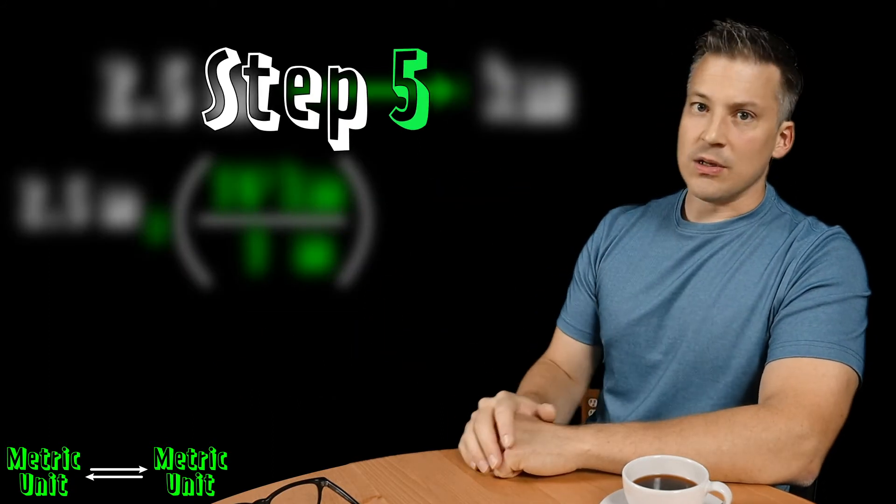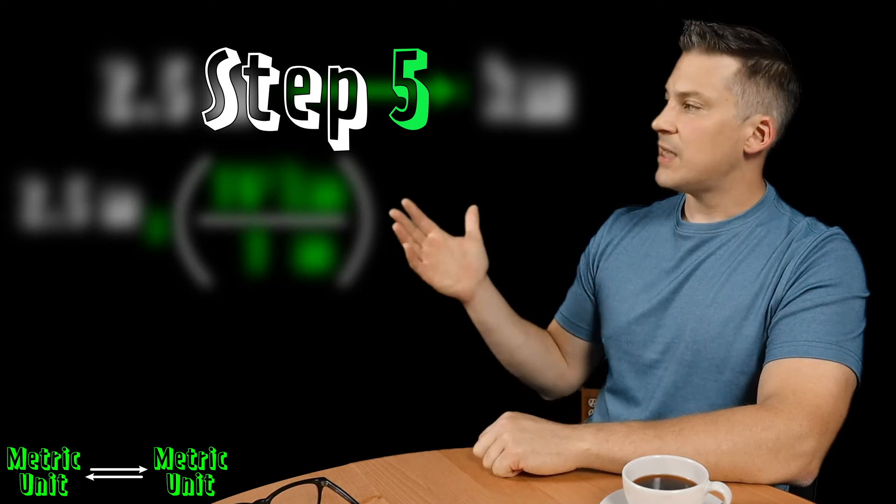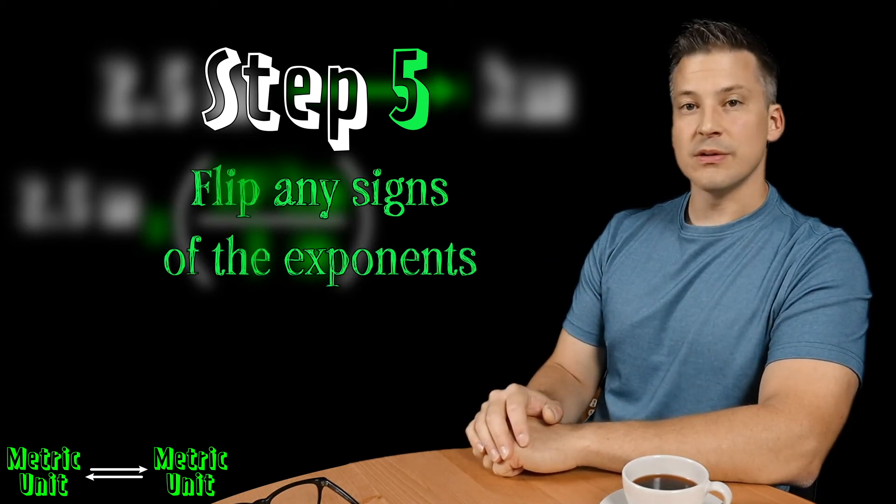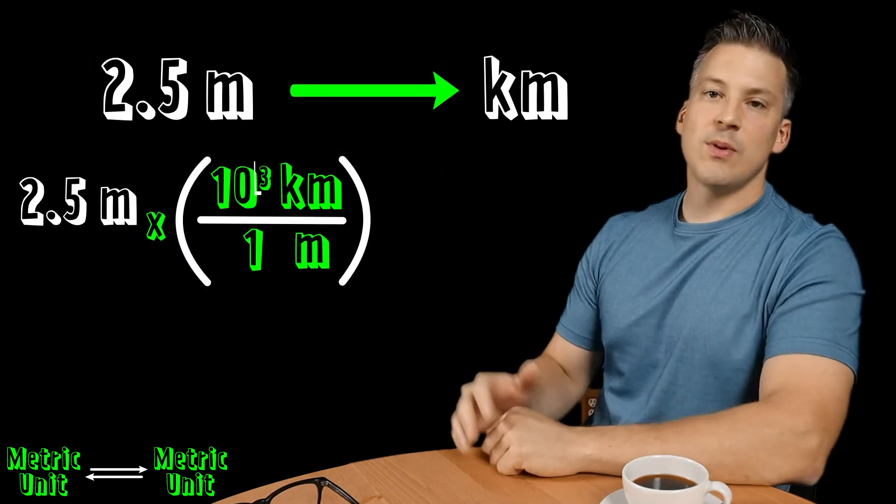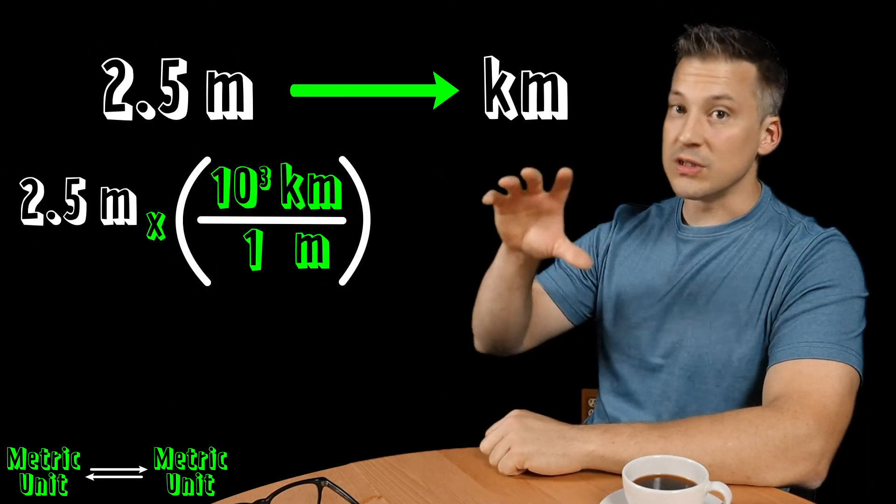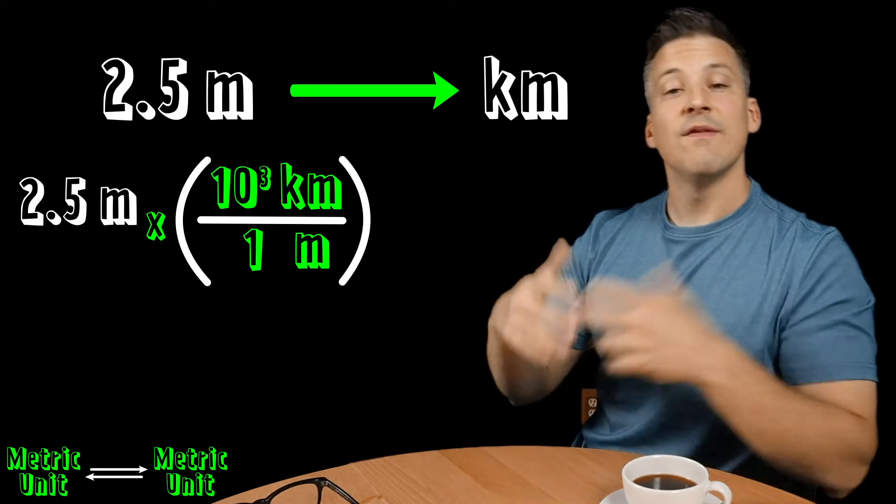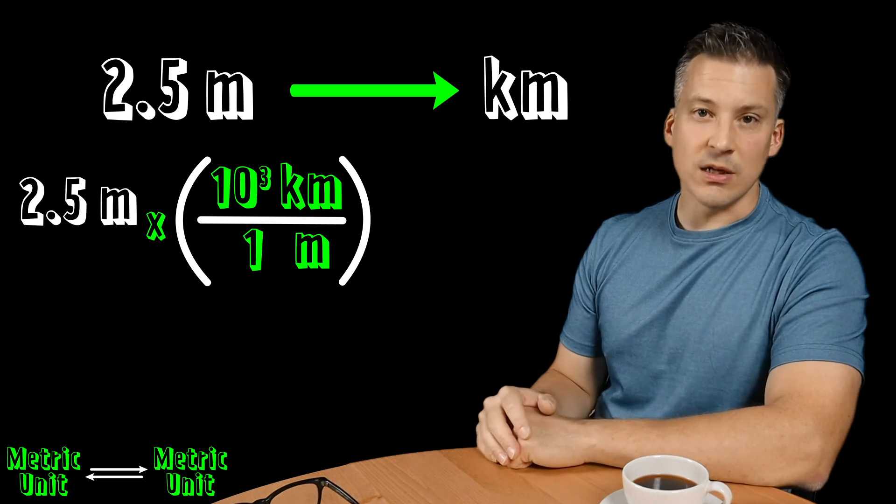The fifth step here is really the most important. The fifth step says to flip any signs of the exponents. So now if you have an exponent here in the conversion fraction, you're going to flip the sign, meaning if it's positive it becomes negative. If it's negative, it would become positive.